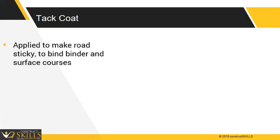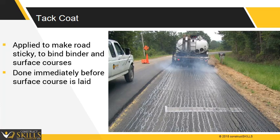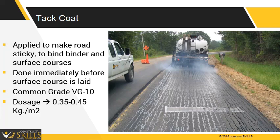A tack coat is normally applied to make the road surface sticky prior to the surface course being applied. To ensure proper binding, the tack coat should be sprayed immediately before the surface coat is placed. Common practice is to use VG10 grade bitumen with 0.35 to 0.45 kg per square meter of application.